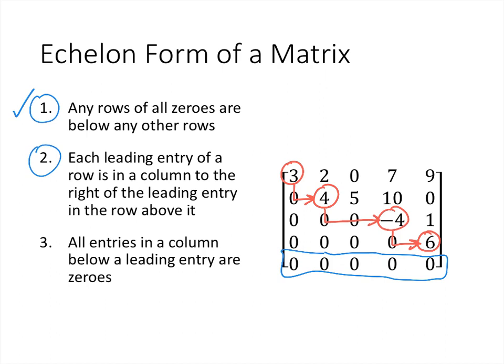Condition 2 checks out. For condition 3, all entries in a column below a leading entry have to be zeros. Everything below the 3 is 0 — check. Everything below the 4 is 0 — check. Everything below the negative 4 is 0 — check. Everything below the 6 is 0 — check. So condition 3 checks as well, and this matrix is in fact in echelon form.